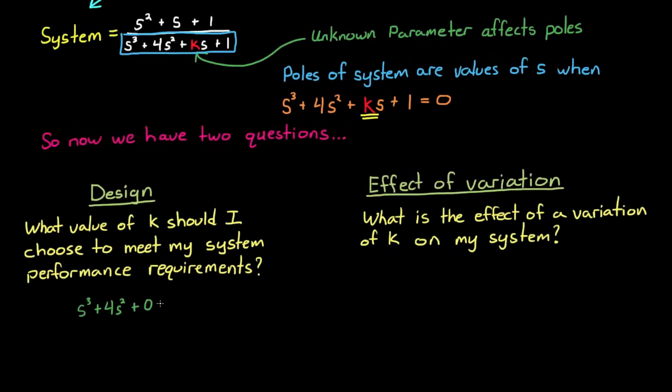I mean, if you didn't know any better, you could just pick a random value of k, say k equals 0, and then plot the poles in the s-plane. Since this is a third order system, you'd expect three roots of this polynomial, or three different poles for this system. And when k equals 0, those poles are here. Now you can pick a new value of k, we'll say k equals 1, and plot those poles on the exact same chart.